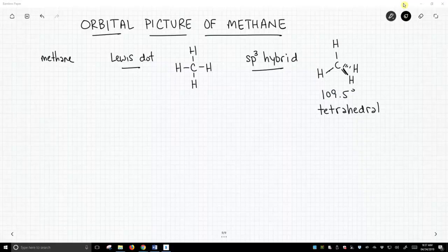On the screen we have methane written as a word. We have the Lewis dot representation of methane and we have another representation that shows it as an sp3 hybridized carbon with the hydrogen coming off with bond angles of 109.5 degrees and the tetrahedral geometry.